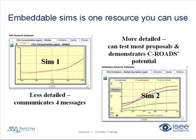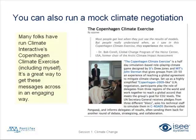So, back to the question of how do you get the message out there. One way is to use embeddable sims — we've got the less detailed one communicating four messages, and we've got the more sophisticated one which demonstrates the potential for sea roads.